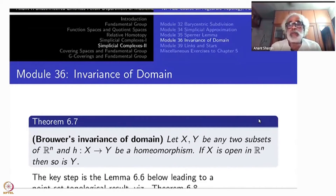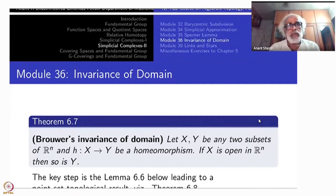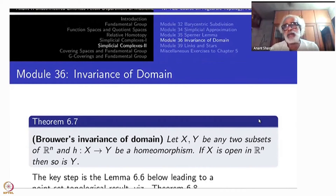Think of Rⁿ and Rᵐ with N less than M. Put Rⁿ as a coordinate subspace of Rᵐ. You have two subsets: one is Rⁿ cross {0,0,...,0} and another is Rᵐ, both subsets of Rᵐ. If they were homeomorphic, since the whole Rᵐ is open, Rⁿ cross {0,0,...,0} should also be open—but we can easily show coordinate inclusions are not open sets; they are closed sets but definitely not open. Therefore Rⁿ and Rᵐ are not homeomorphic, an easy consequence of this Big Theorem.